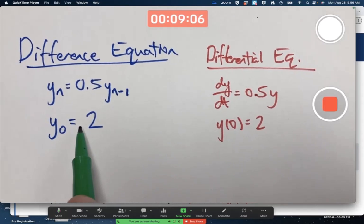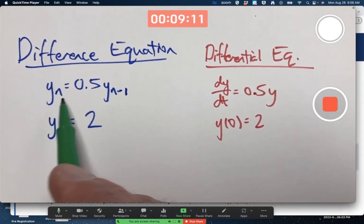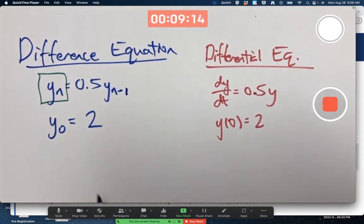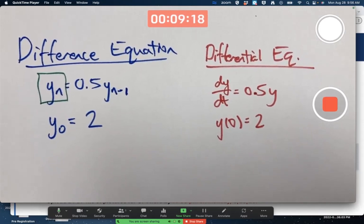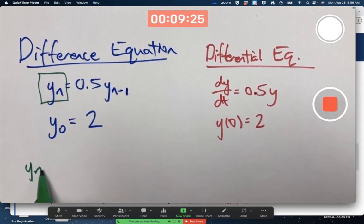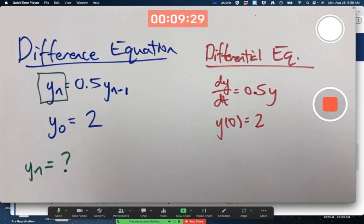Let's focus on the difference equation first. What we're after is a simplified expression for this quantity labeled y sub n. That's what we're after. Y sub n has some formula that we'd like to know. What is it?